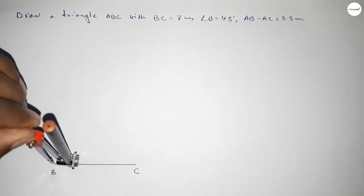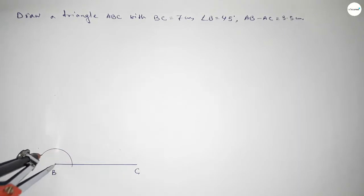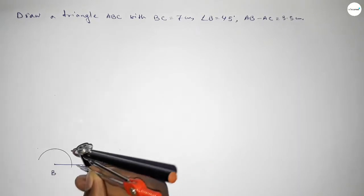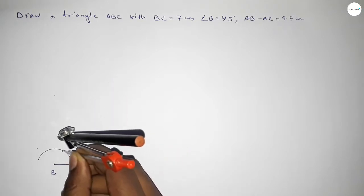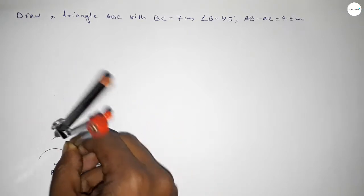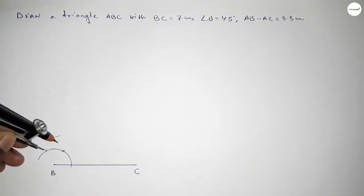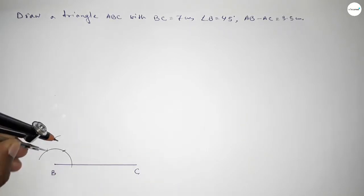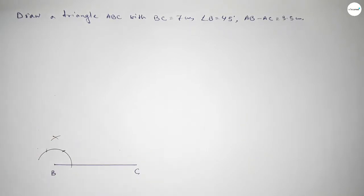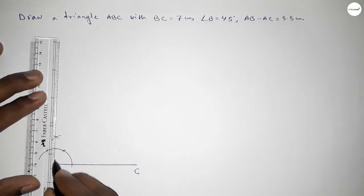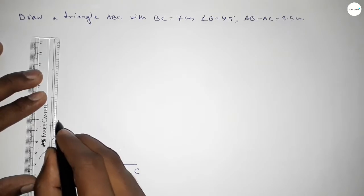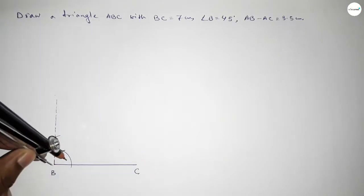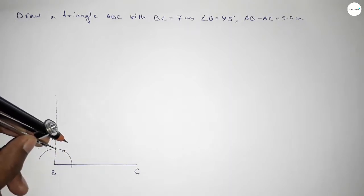Taking any length and drawing an arc using the compass. Putting the compass here and taking the same length, cutting here with the same length. Putting the compass here and cutting here, drawing an arc again with the same length. Both curves intersect at a point — joining here to get a 90 degree angle.